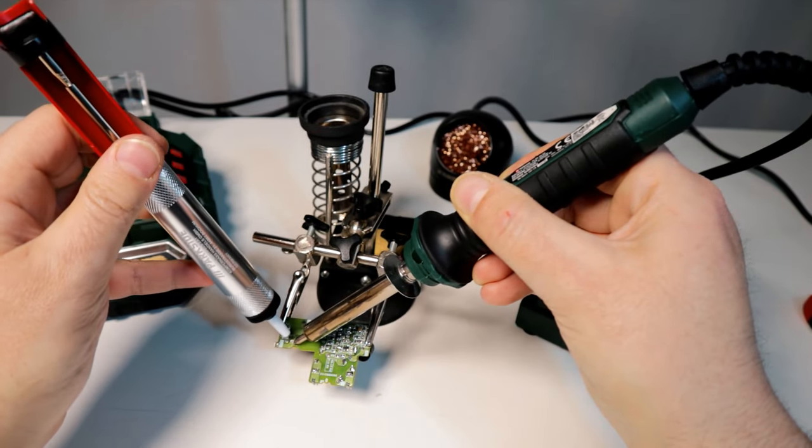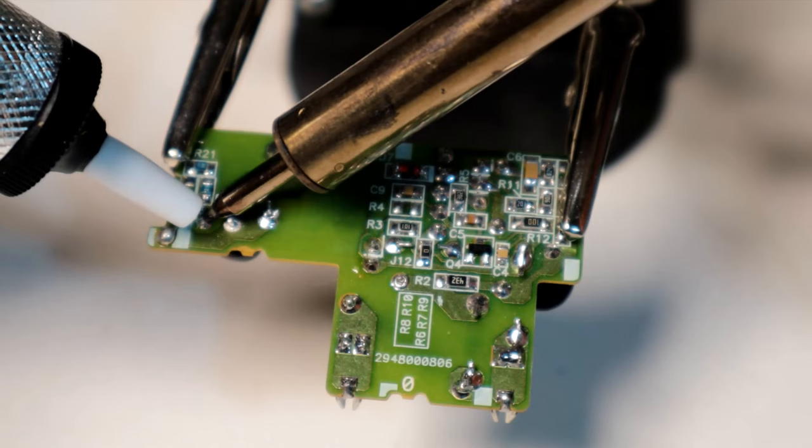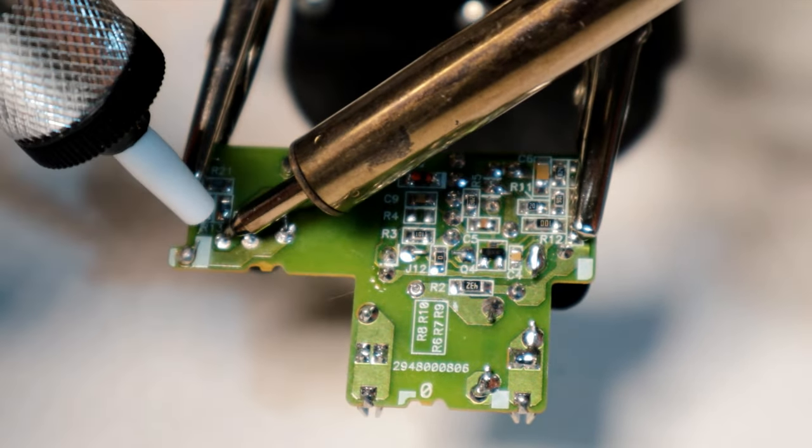Use a hot air soldering iron to melt the solder, remove the component, and then remove the tin with a desoldering braid or vacuum pump.